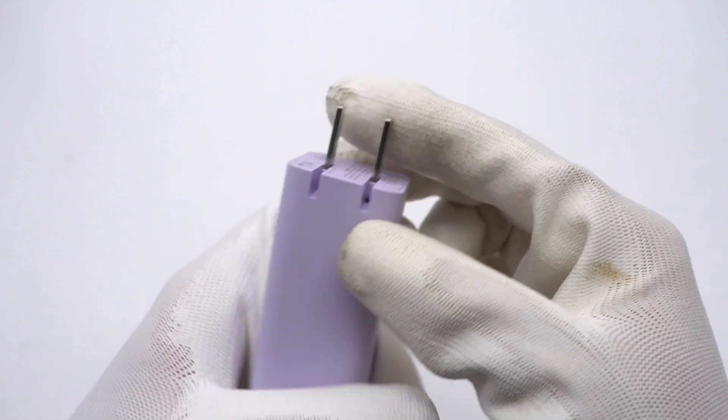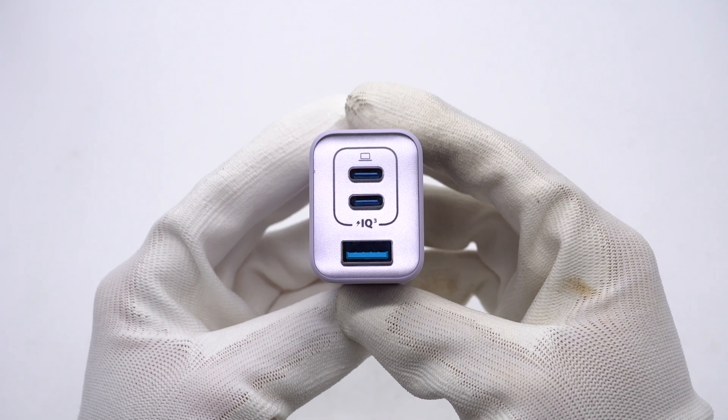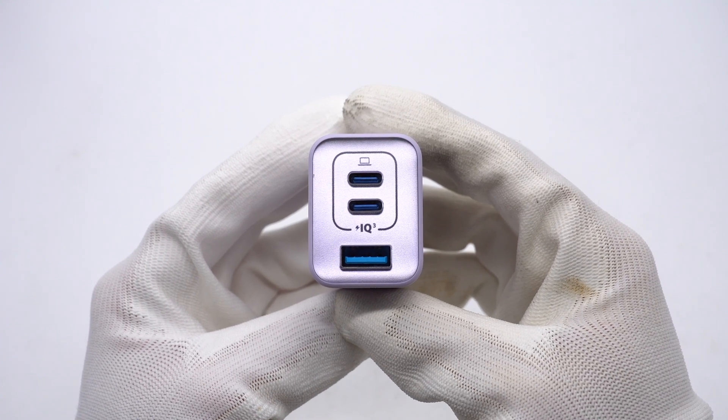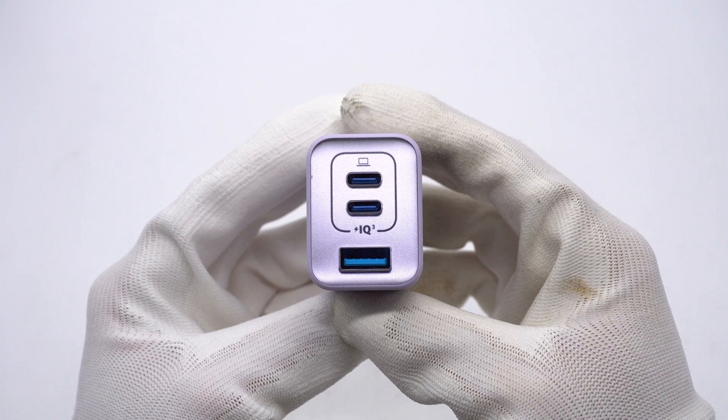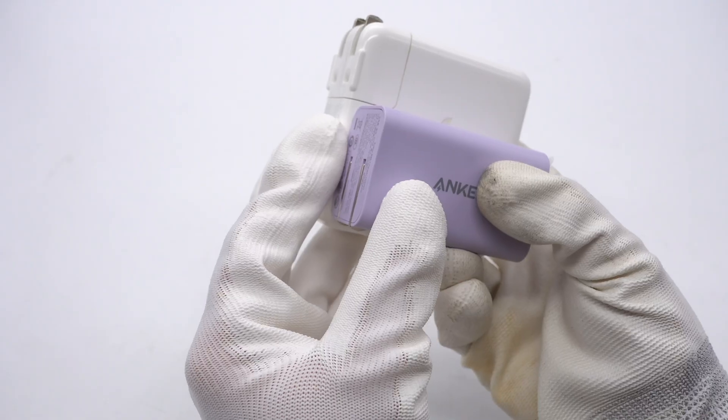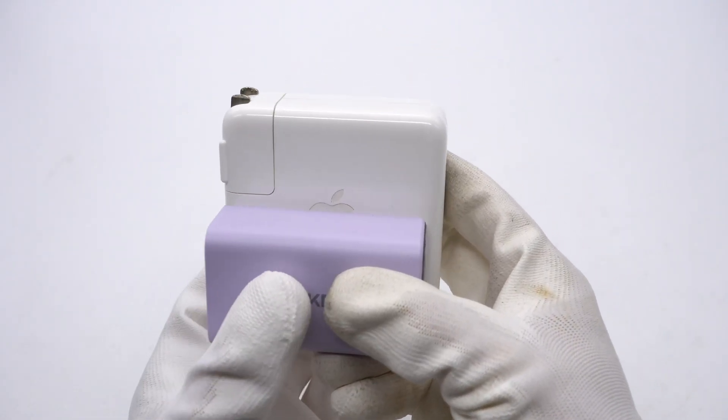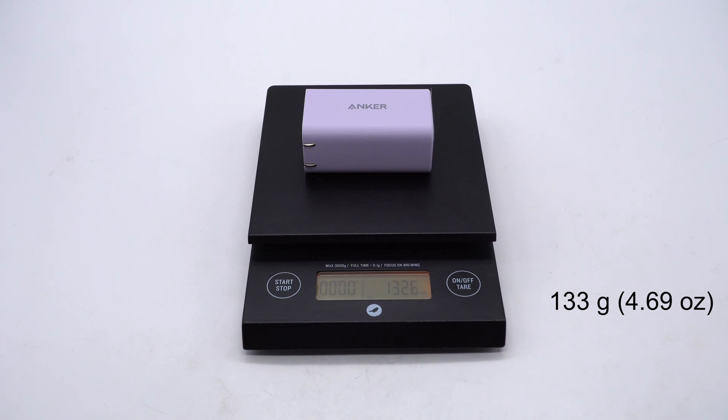Here are the foldable prongs. The output panel adopts a translucent design. And it has a USB-A and two USB-C ports. They are all blue, and the USB-A has special pins. The size of it is about 67 by 39 by 30mm. It's much smaller than the Apple 61W charger. The weight is about 133 grams.